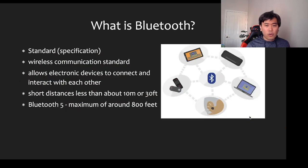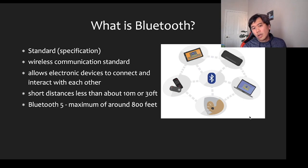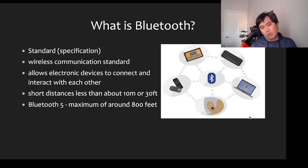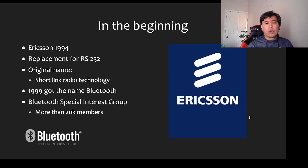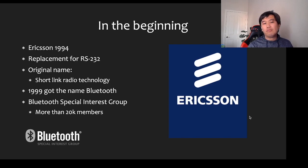Bluetooth is a standard specification for wireless communication. It allows electronic devices to connect and interact with each other, typically at short distances — less than 10 meters or 30 feet — but Bluetooth 5 now has a maximum range of around 800 feet. It got started by Ericsson back in 1994 to replace RS-232. The original name for Bluetooth is Shortlink Radio Technology, and it got its name back in 1999.